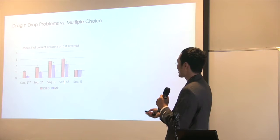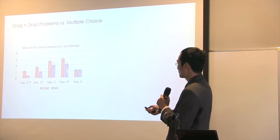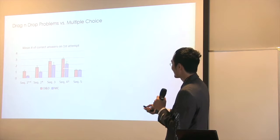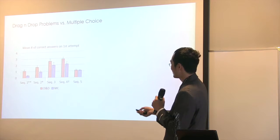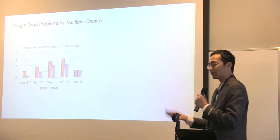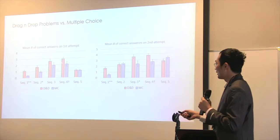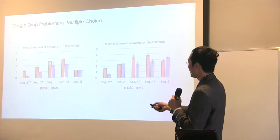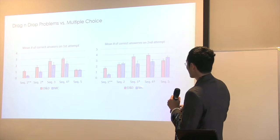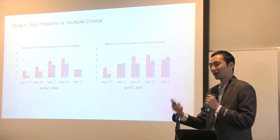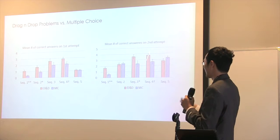These are five sequences of deliberate practice activities showing performance of students in the drag-and-drop group versus the multiple choice group. In these different sequences, the drag-and-drop group actually learned the skills better on the questions afterwards. Sometimes the difference is not very significant on the first attempt, but it becomes bigger on the second attempt — they still have some difficulty on the first attempt but get to correct answers quicker.